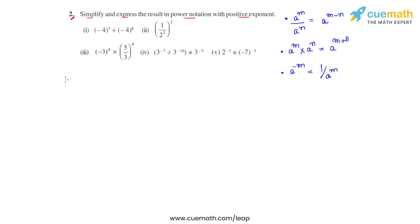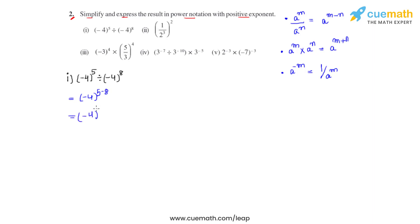The first problem is negative 4 raised to 5 divided by negative 4 raised to 8. The bases are same and they're in division, so the powers must get subtracted. We write this as negative 4 raised to 5 minus 8, which gives us negative 4 raised to negative 3.